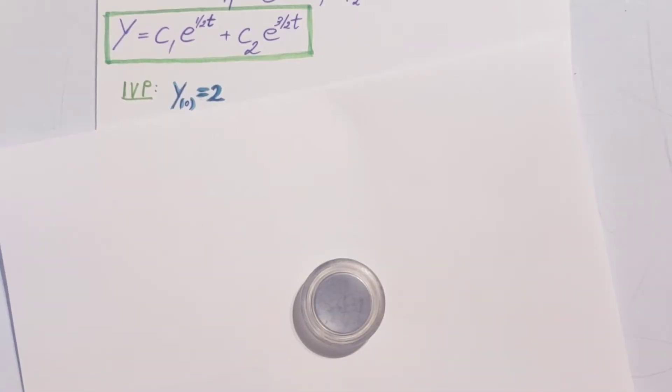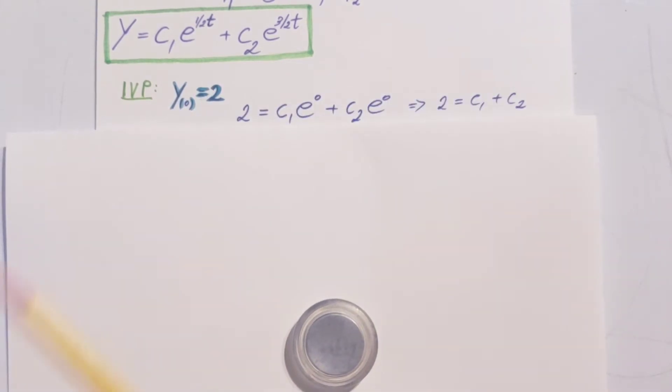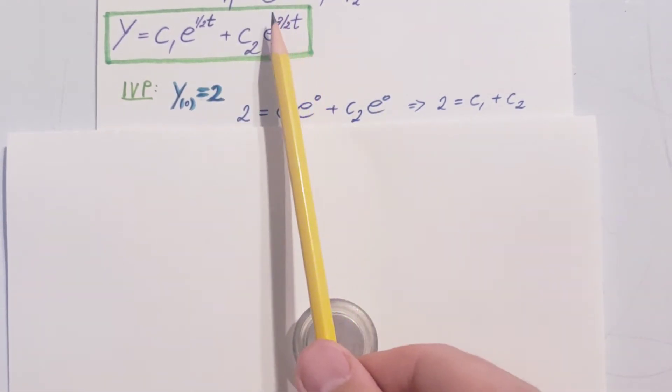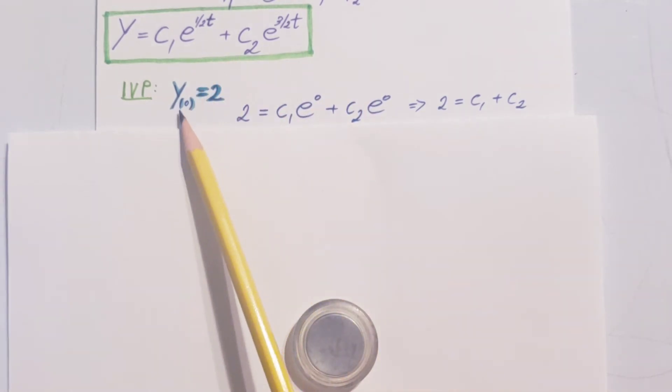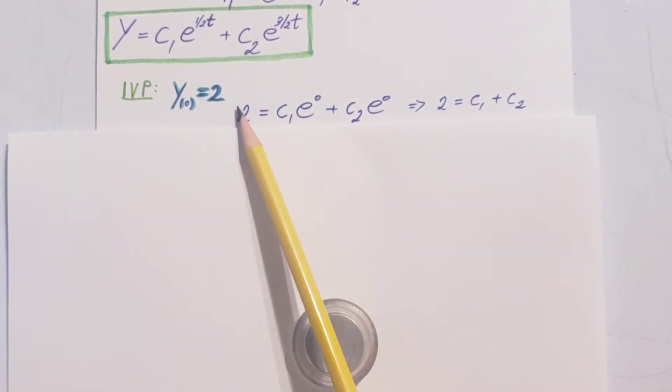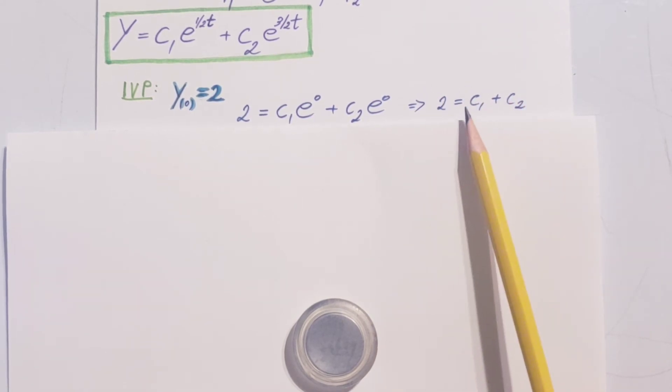Now, we solved the differential equation part. Now, let's solve the IVP part. First, we know y at 0 is equal to 2. Therefore, we're going to take this equation. Y is equal to 2, so 2 equals c1 e to 1/2, and instead of t we are plugging in 0. So there you go, plus c2 e to the 3/2 times, instead of t, 0 again. So there you go. And from this, we're going to get this equation: 2 equals c1 plus c2.